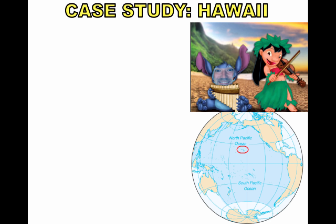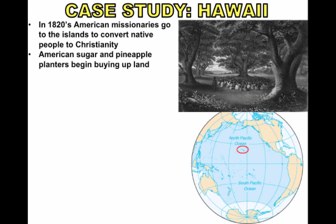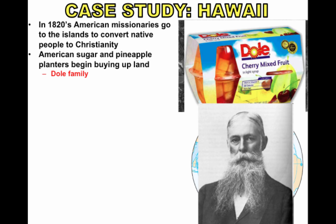You can see all these motives in the first case study, which is Hawaii. Hawaii was an independent land, not part of the United States. In the 1820s, American missionaries started going over there to convert the native people to Christianity. Over time, American sugar and pineapple planters began buying up the land — it was very profitable. The Dole family plays a huge key role in this process around the 1860s.